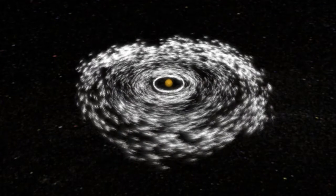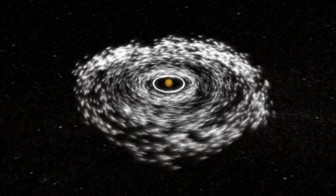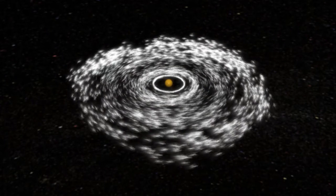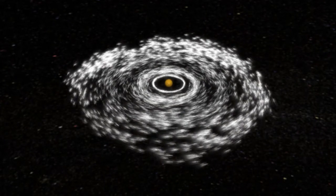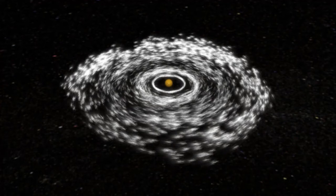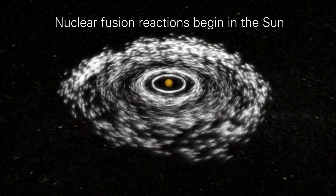Eventually, the mass of the proto-sun grew to be great enough that its interior became extremely dense and hot. When the temperature became high enough, nuclear fusion reactions began and the sun lit up.